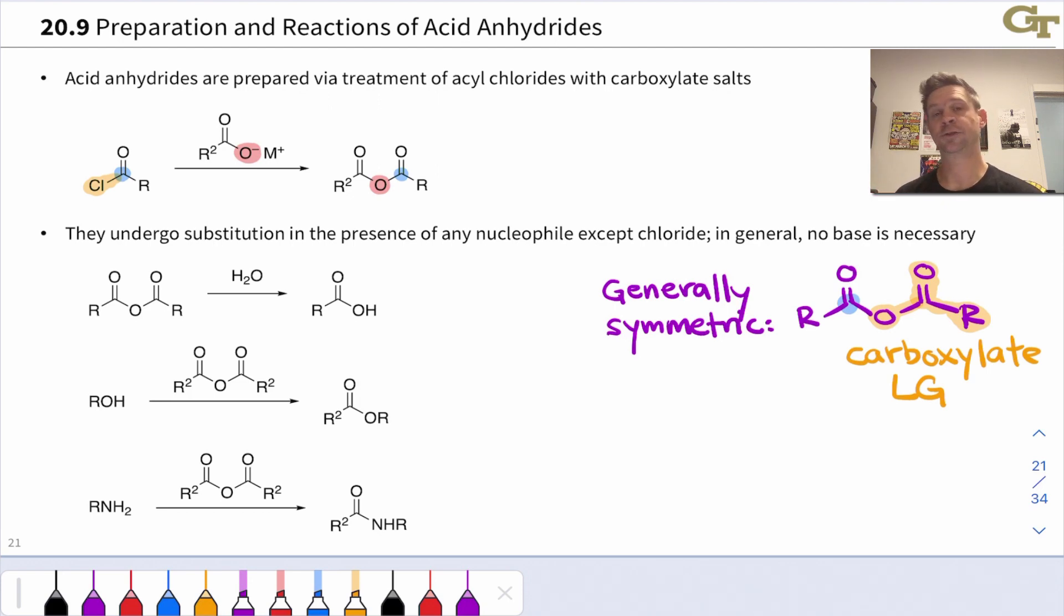Like acyl chlorides, acid anhydrides undergo nucleophilic substitution with a wide variety of nucleophiles. Pretty much any nucleophile except chloride, this reaction is thermodynamically favorable. It's not favorable in the case of chloride because the carboxylate anion is actually less stable than Cl-. They are susceptible to hydrolysis, so water with that nucleophilic oxygen can displace the carboxylate, and the resulting structure is a carboxylic acid after neutralization.